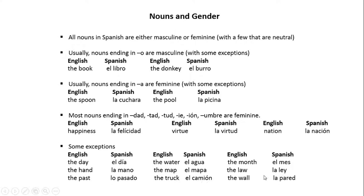At the lower right are some nouns that do not end in any of the letters listed above, but they are nouns and so they have a gender. The month is 'el mes', the law is 'la ley', and the wall is 'la pared'.